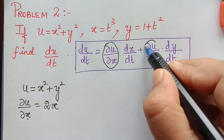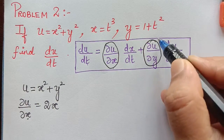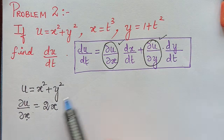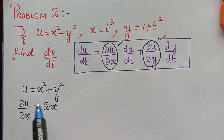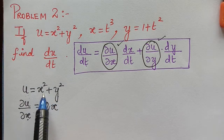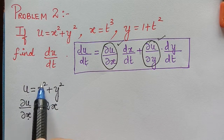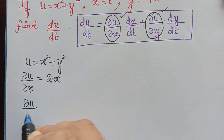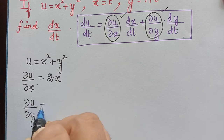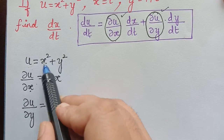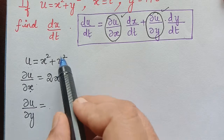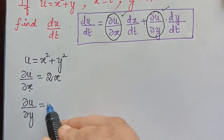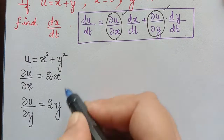Next we find ∂u/∂y, that is, we differentiate u with respect to y. Here x is treated as constant, so x squared becomes constant and differentiates to 0. We only differentiate y squared, giving ∂u/∂y equal to 2y.